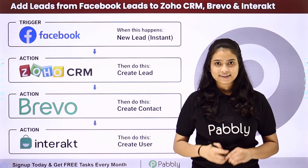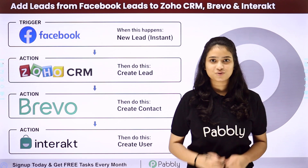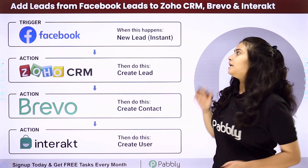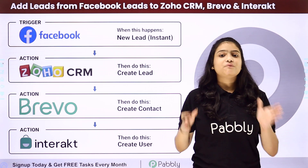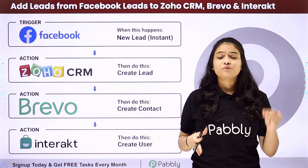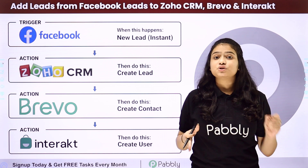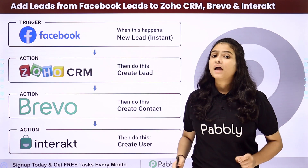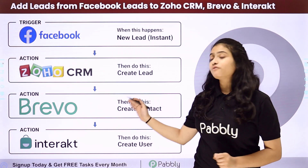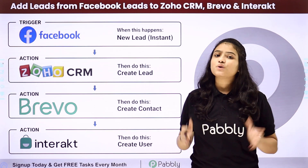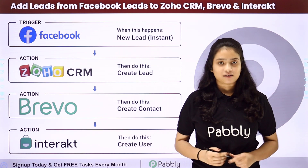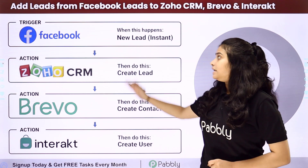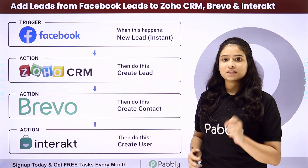Hello everyone, welcome to Pabbly Connect. In today's video, we are going to learn how to add leads from Facebook leads to Zoho CRM, Brevo and Interact. We want that whenever a new lead is generated through Facebook lead ads, automatically that person should be added in our Zoho CRM in the form of a lead, and the same person should also be added as a new contact in our Brevo account, and we also want to create a new user in our Interact account. We want to automate this process, and for that we are going to integrate all these applications by using Pabbly Connect.